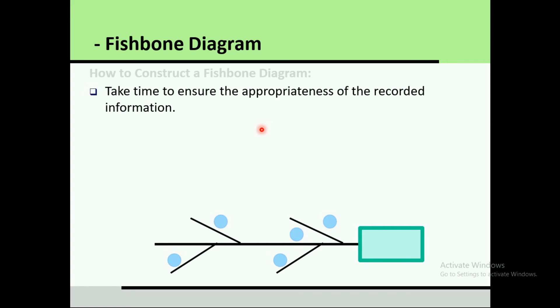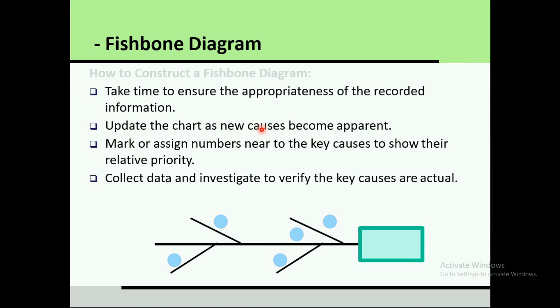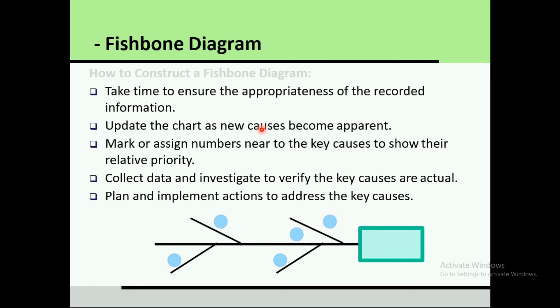The next step is to take time to ensure the appropriateness of the recorded information and update the chart as new causes become apparent. Keep the chart on paper or in Microsoft Excel so you can easily update it. Mark or assign numbers near key causes to show their relative priority. Collect data and investigate to verify the key causes are actual, then plan and implement actions to address them.